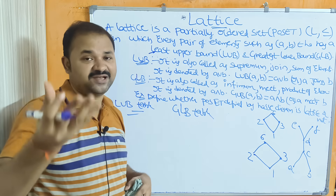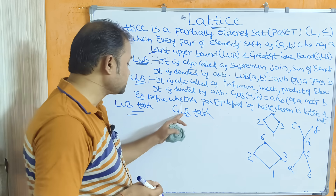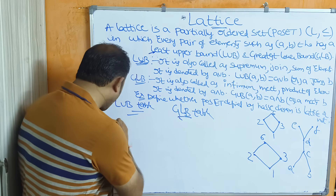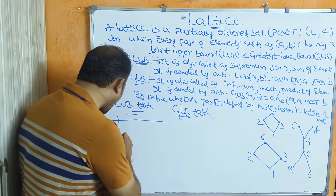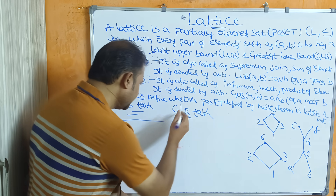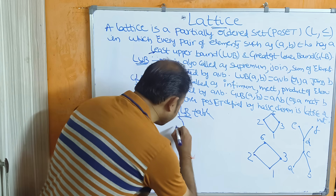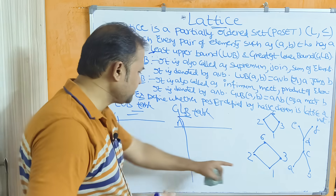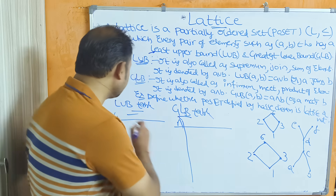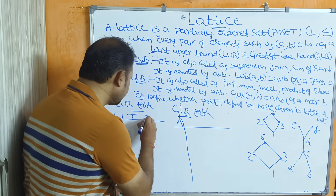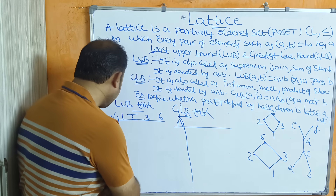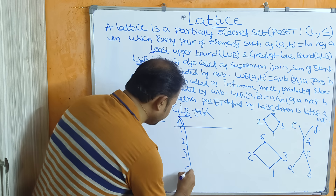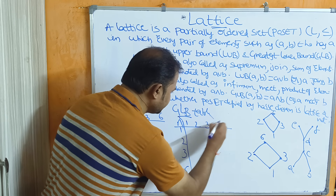In the first example, the values are 1, 2, 3, and 6 — these are the rows and columns for both the LUB and GLB tables. The LUB is denoted by the symbol ∨ and the GLB is denoted by the symbol ∧.